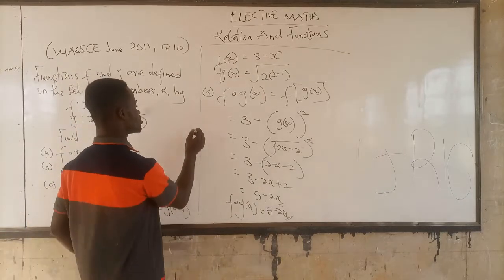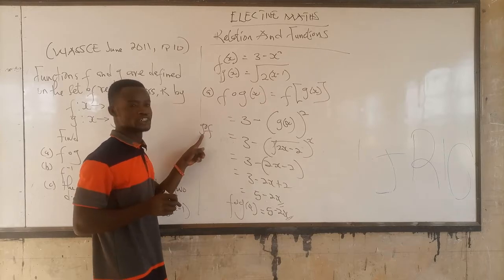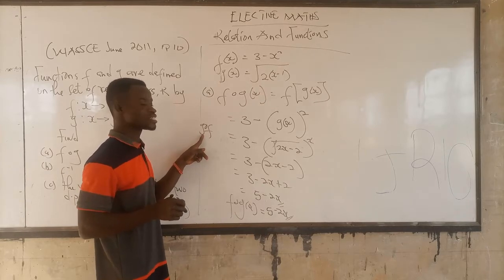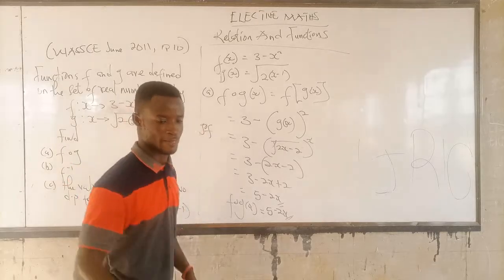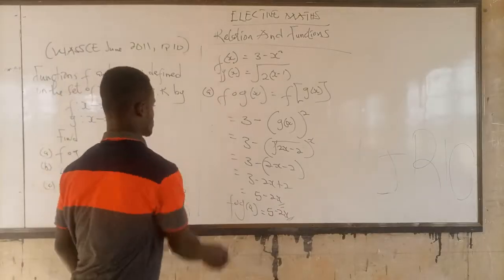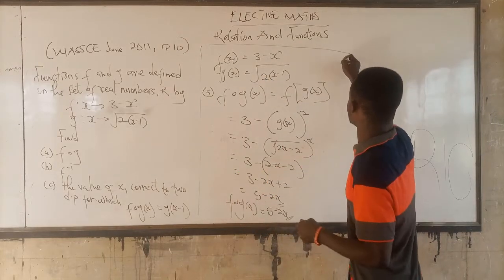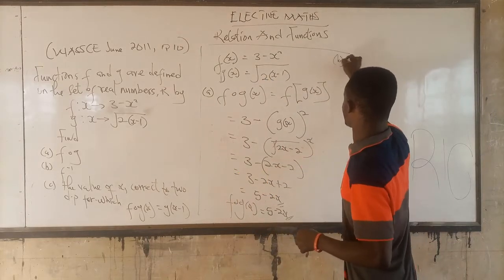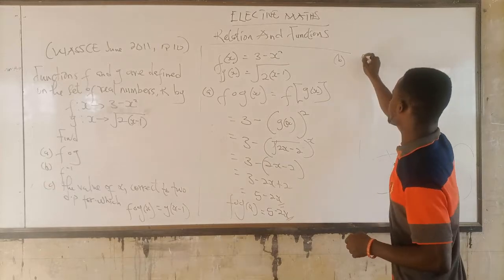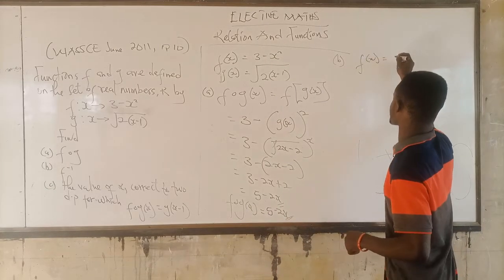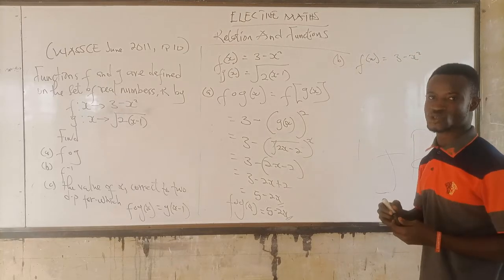In the same way, if you meet a question like gof, it means you start by writing g, and where you see x in g, you put the function f there. Now let's look at f inverse. We have f(x) = 3 minus x squared.